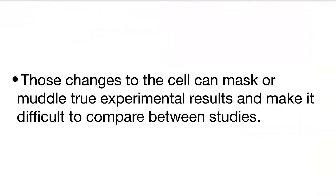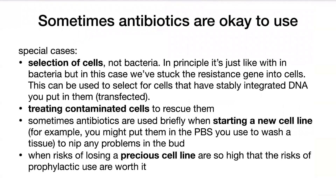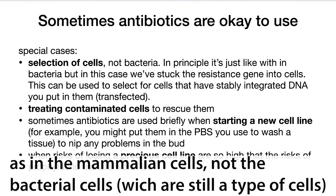When we're talking about prophylactic use, we want to avoid that for mammalian cell culture for the most part. But there are times when it's okay to use antibiotics. One of these cases is in the selection of cells — and here we're talking about the selection of mammalian cells, not bacteria.